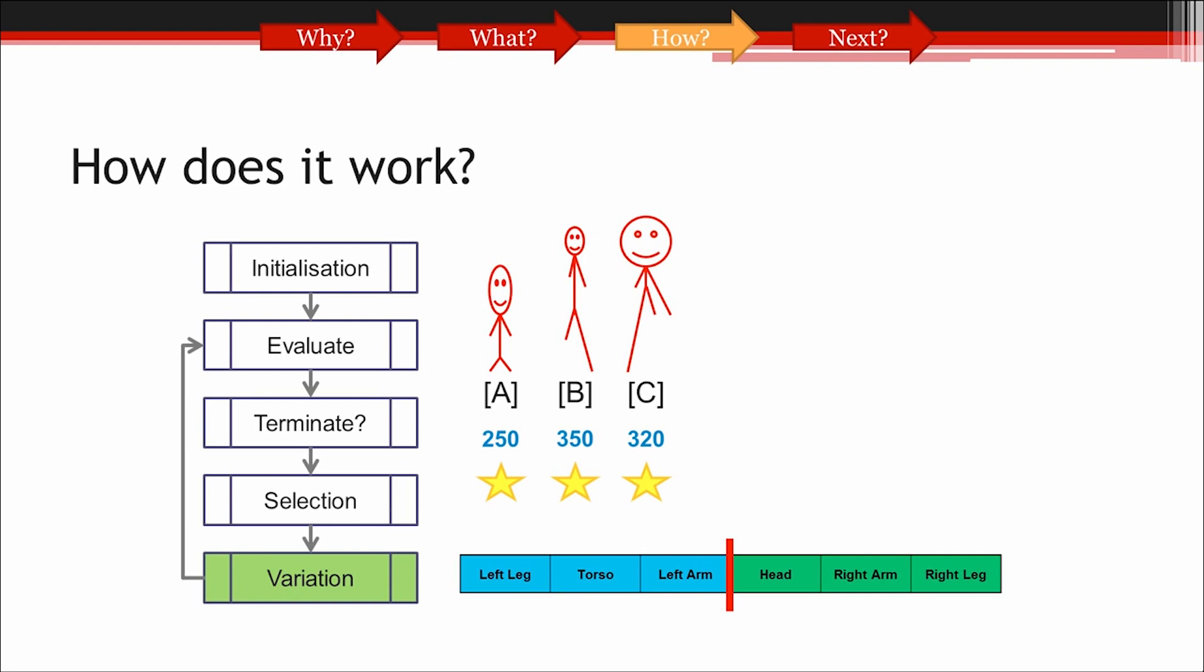We'll stick these two halves together to form our new offspring solution. And then start the process again, but this time with the parent with the next highest fitness score. Let's see what happens.